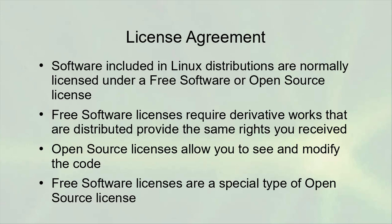When you are done with the installation, you may see a license agreement. Be aware that Linux comes with licenses like any other operating system. Most of the packages you get on Linux are distributed under free software or open source licenses. Free software licenses require that all derivative works be distributed with a similar license — meaning if you have access to modify it, anyone you redistribute it to has the same rights you received. Open source licenses allow you to see and modify the code. Free software licenses are a special type of open source license that is slightly more restrictive but provides more long-term security of the source code.